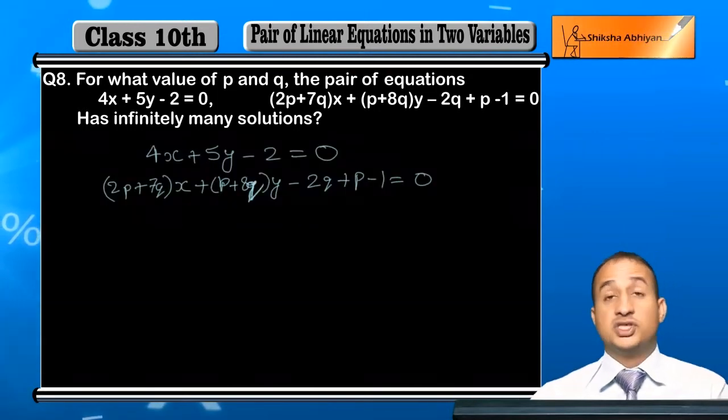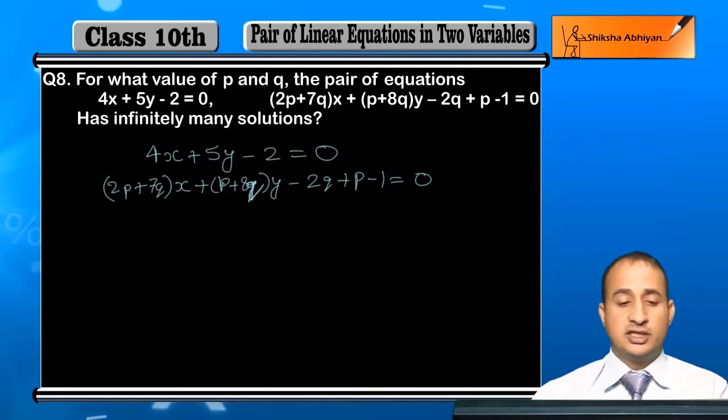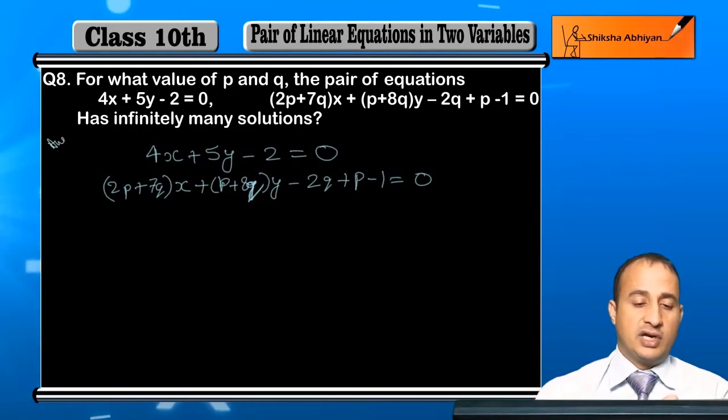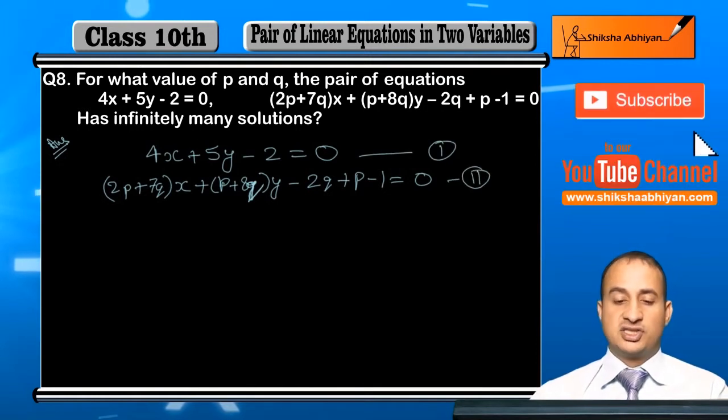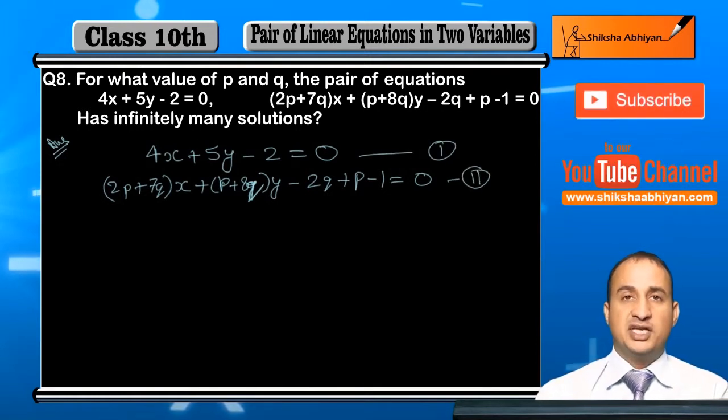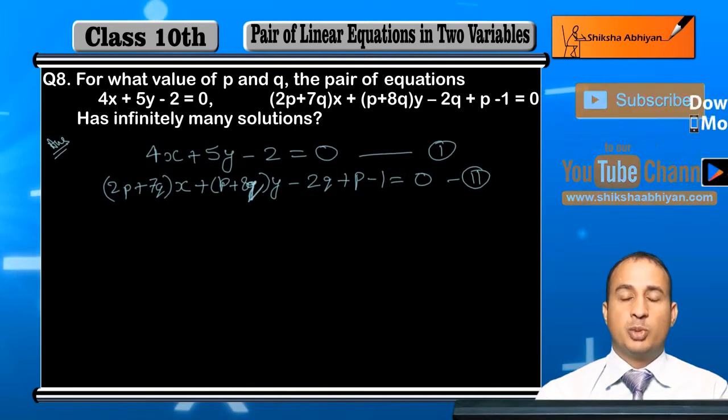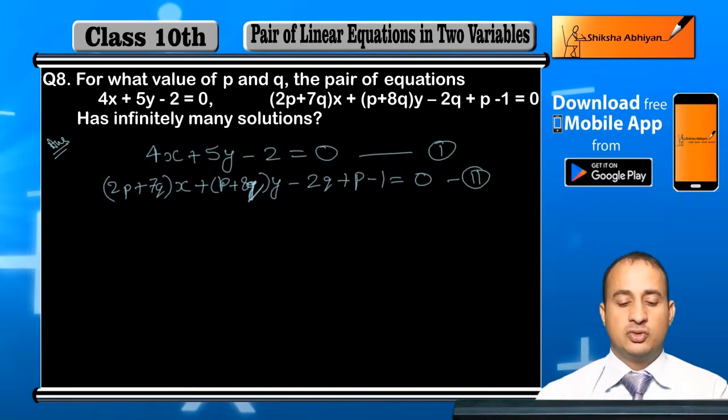So see, what do I do for that? I will write both equations down here. First of all, what are the conditions for infinitely many solutions? a1 upon a2 is equal to b1 upon b2 is equal to c1 upon c2.